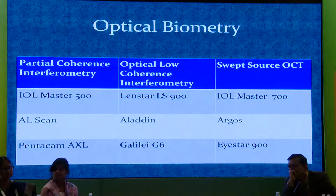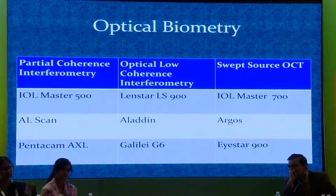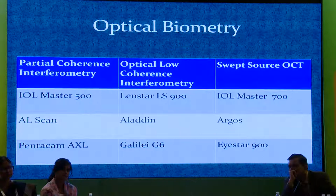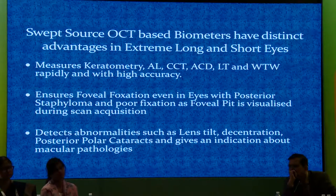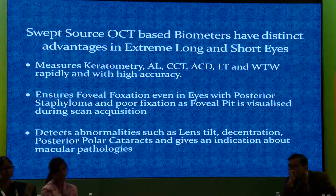As far as optical biometry goes, the swept-source — the new one, the IOL-700 — and the AL-Scan from NIDEK, Argos, and the LENSTAR 900 are better. How are these superior to other optical biometers on the market?